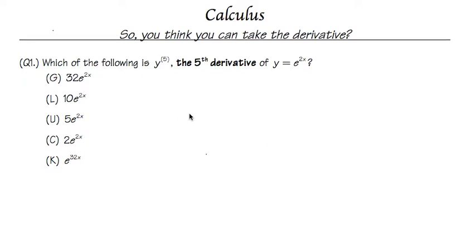Okay, so you think you can take the derivative? Let's go. For the first question: which of the following is y^(5)? This notation means the fifth derivative of the equation y = e^(2x). For the fifth derivative, we just need to take the derivative of this five times.